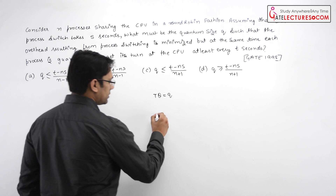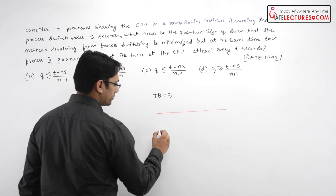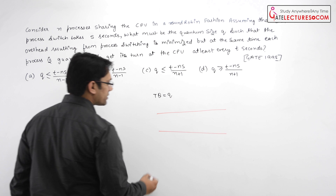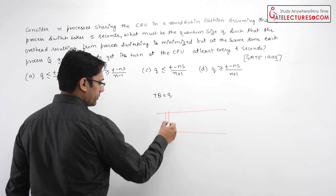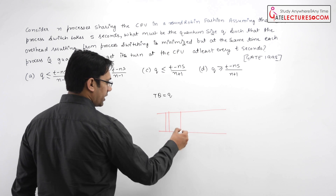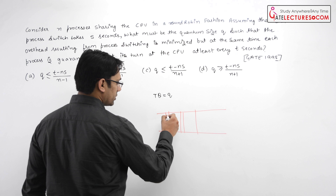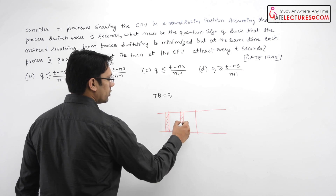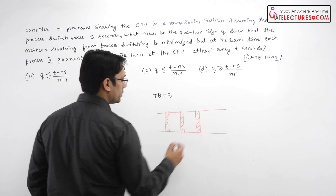This is the Gantt chart. They are saying if we are doing a process switch then there is an overhead between every process switch.